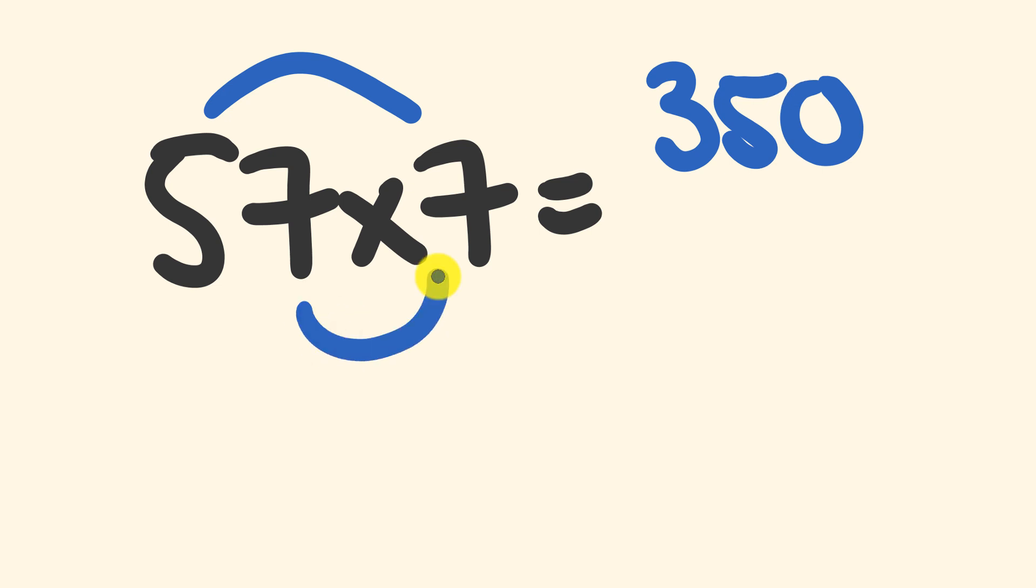The second step is we're just going to multiply this 7 times 7. 7 times 7 is 49. And finally, what we're going to do is we add these. So 350 plus 49, we get our answer. 399.